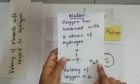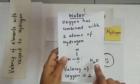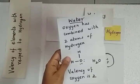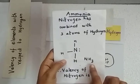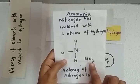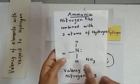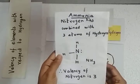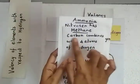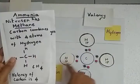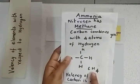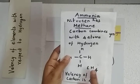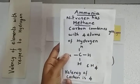To recap: water (H₂O) — oxygen combines with 2 atoms of hydrogen, so the valency of oxygen is 2. Ammonia (NH₃) — nitrogen combines with 3 atoms of hydrogen, so the valency of nitrogen is 3. Methane (CH₄) — carbon combines with 4 atoms of hydrogen, so the valency of carbon is 4.